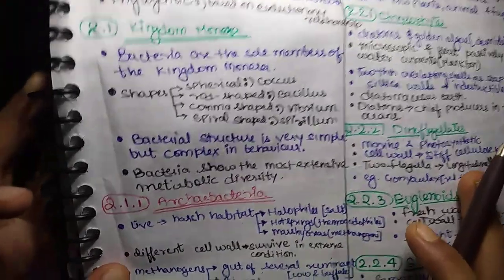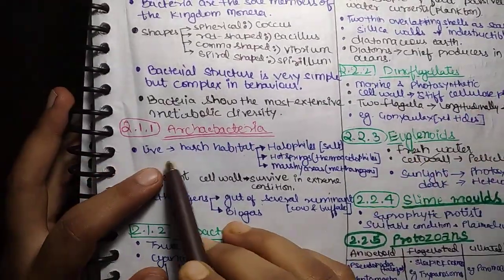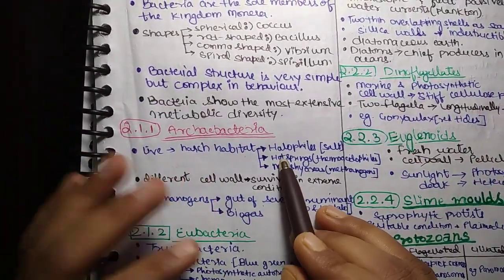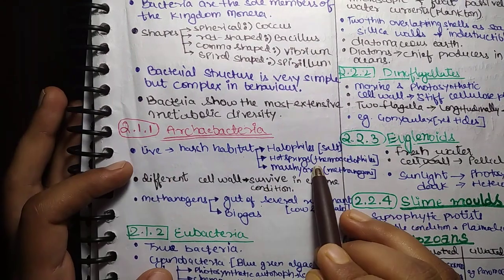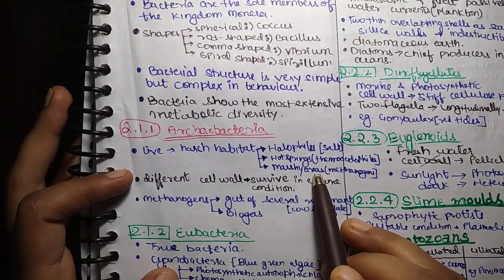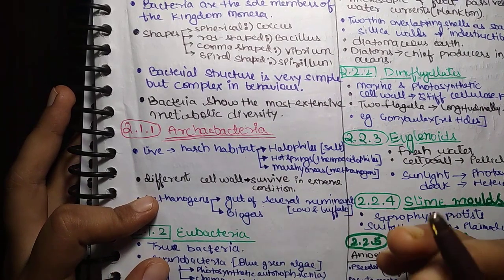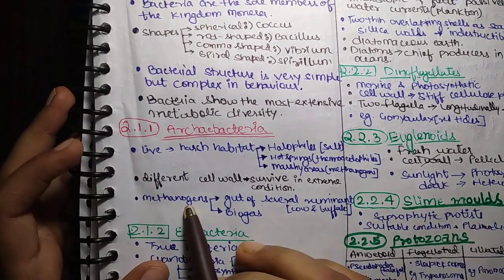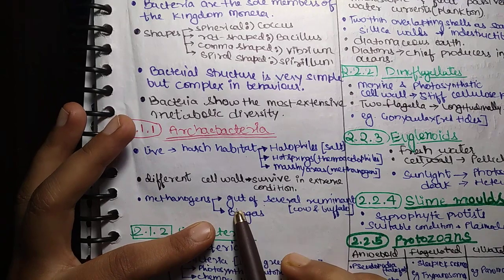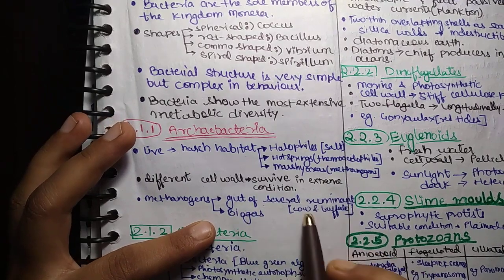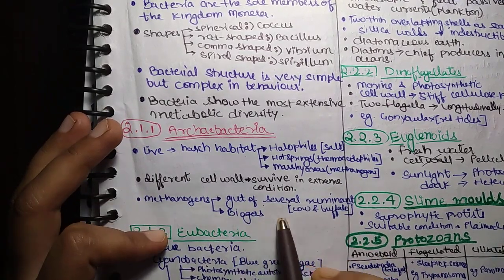Next sub-topic is Archaebacteria. Archaebacteria live in harsh habitat. Halophiles, which are in salt, hot springs Thermoacidophiles, marshy areas Methanogens. Different cell walls are the same. So, survive in extreme conditions. Methanogens, where is present? Gut of several ruminants, cow and buffalo. This is from biogas produced.